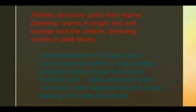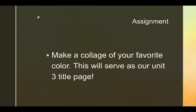A meat market in Chicago lost a lot of business when it was painted bright yellow because it gave the meat a really purple-ish look, but when they repainted in a bluish green, the meat started to look more fresh and their sales went back up. Your assignment is to make a collage of your favorite color — this will serve as our Unit 3 title page. Make sure you have all your assignments, including your review, glued into Unit 2 before you start. Our next unit is all about color, so get ready to have a fun time in Unit 3!